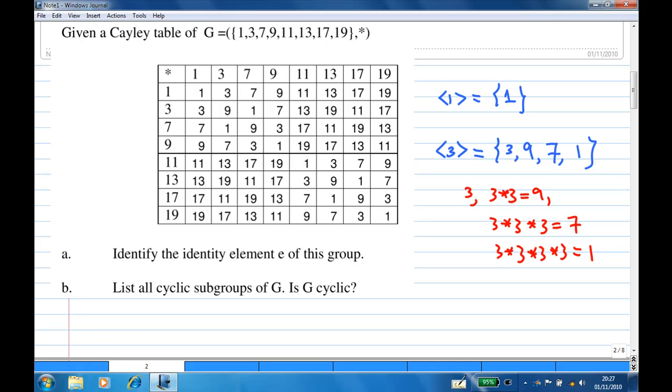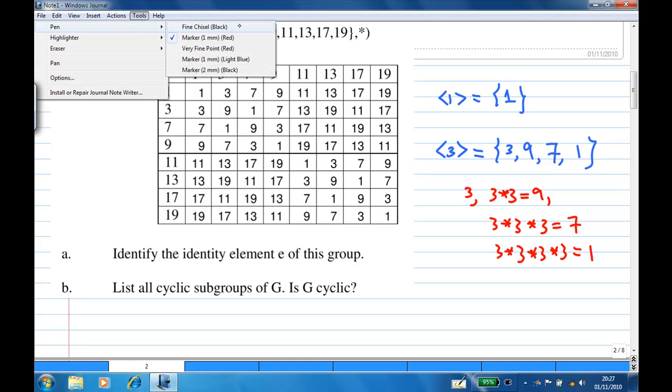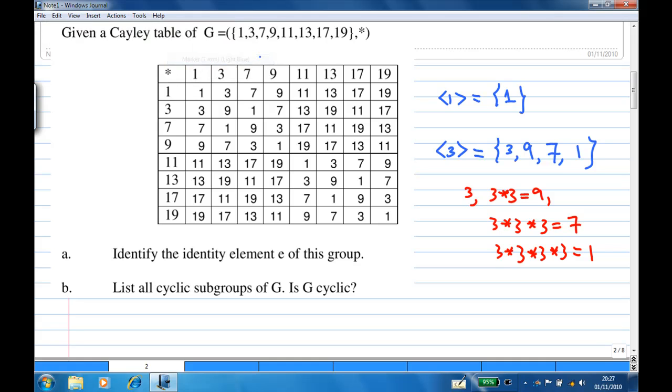Now since the inverse of 3 is equal to 7, because 3 times 7 is 1, therefore this is also the same as the cyclic subgroup generated by 7, as 3 inverse equals 7.